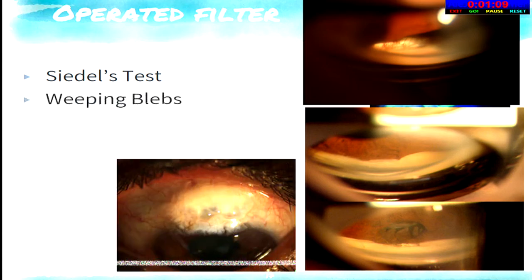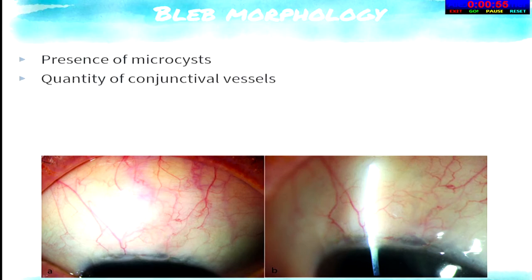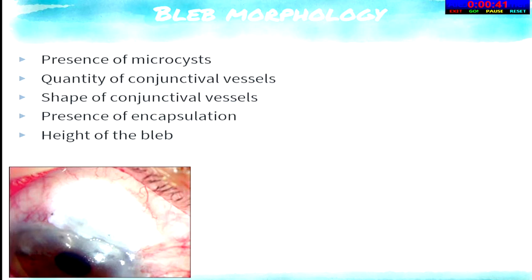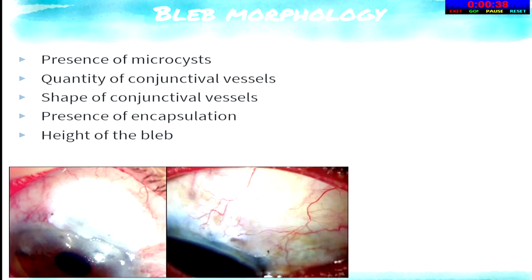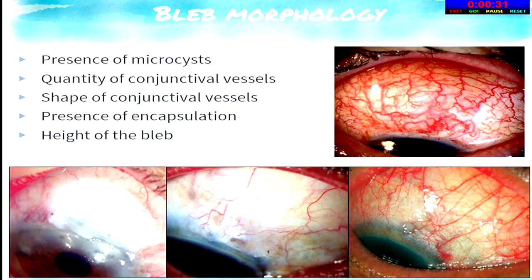Sometimes you might have overhanging blebs with a thin-walled cystic appearance, which can be a focus for infection. You can also assess bleb morphology: the presence of microcysts, the amount of conjunctival vessels, whether it is a vascular bleb, and the shape of vessels. Corkscrew vessels indicate a likelihood of failure and encapsulation. You need to give anti-mitotic drugs to prevent this vascularization.